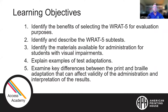I'd like to review our learning objectives for today. We would like you to leave this session able to identify the benefits of selecting the RAT5 for evaluation purposes, identify and describe the RAT5 subtests, identify materials available for administration for students with visual impairments, explain examples of test adaptations, and examine key differences between print and Braille adaptations that can affect validity of administration and interpretation of results.